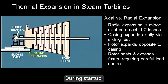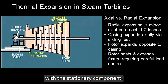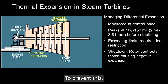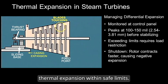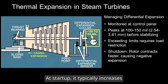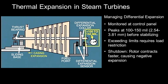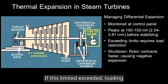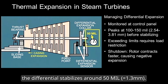During startup, rapid rotor expansion increases the risk of blade contact with the stationary component. To prevent this, load changes must be carefully managed to keep differential thermal expansion within safe limits. At startup, it typically increases to 100 to 150 mils before stabilizing. If this limit is exceeded, loading must be restricted to avoid damage. As the casing continues to expand, the differential stabilizes around 50 mils.